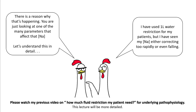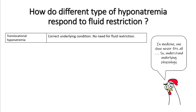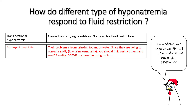Today we'll try to understand the reasons why that's happening. If you want a more basic lecture on this, please watch 'How much fluid restriction does my patient need?' Different types of hyponatremia respond differently to fluid restriction. In translocational hyponatremia, there is no need for fluid restriction and you can correct the underlying condition. In psychogenic polydipsia, the patient is drinking too much water, so they are going to correct very rapidly — you should fluid restrict them.